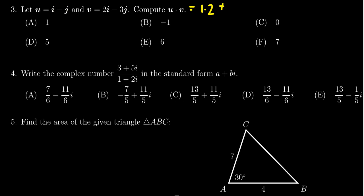For u, it's negative 1, and for v, it's negative 3. So we get 1 times 2, which is 2, and negative 1 times negative 3, which equals 3.